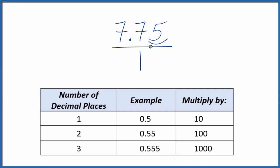I can see that I have one, two places after the decimal point. When I have two places after the decimal point, I'm going to multiply by 100 because when I do that I'll end up with a whole number. So I take 100 times 7.75 and when I do that I end up with 775. So I have my whole number.